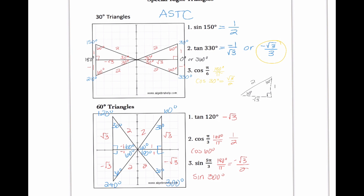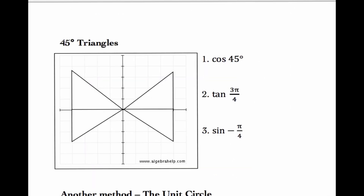I just want us to see that the 30-degree angles and the 60-degree angles really are the same concept. We're using this triangle — it's just our reference angle that changes. Our final set of triangles here is a little bit different. This time we're dealing with 45-degree triangles. So we have 45, 135, 225, and 315 degrees. Those are all 45 degrees away from the x-axis.